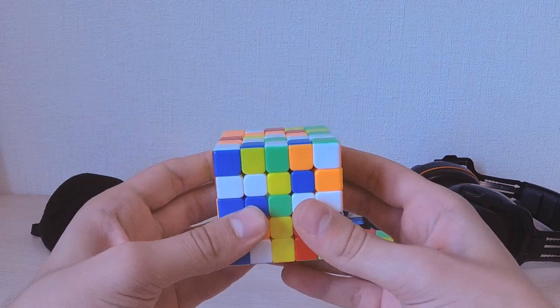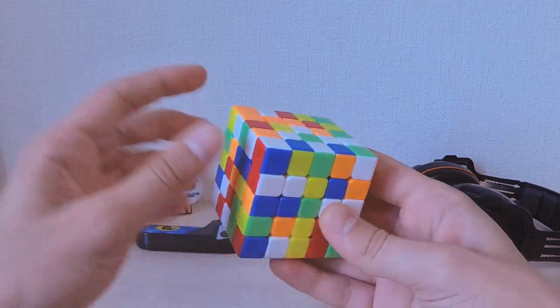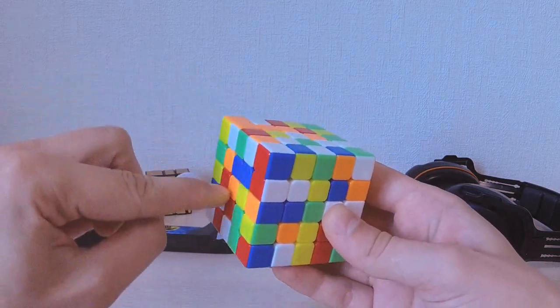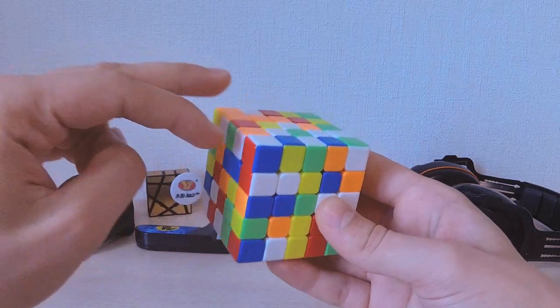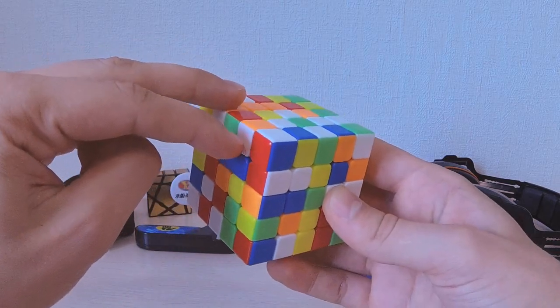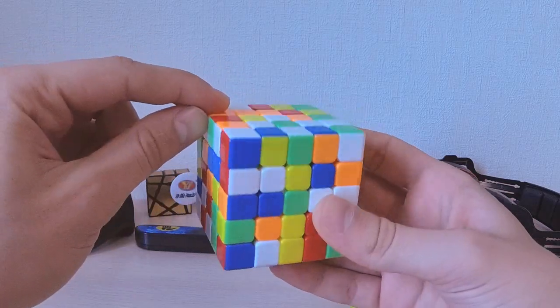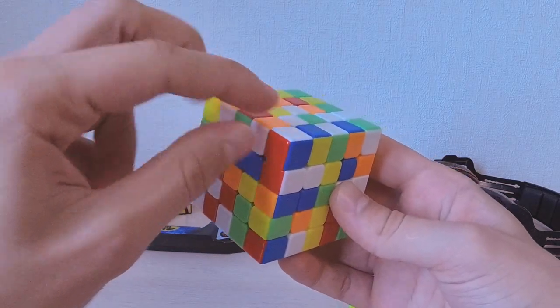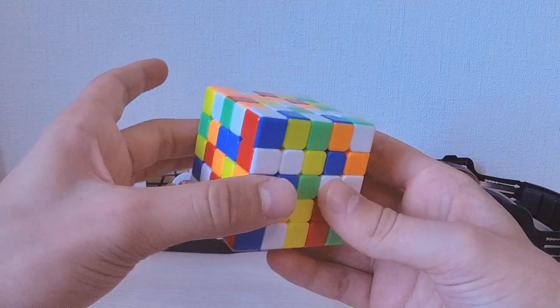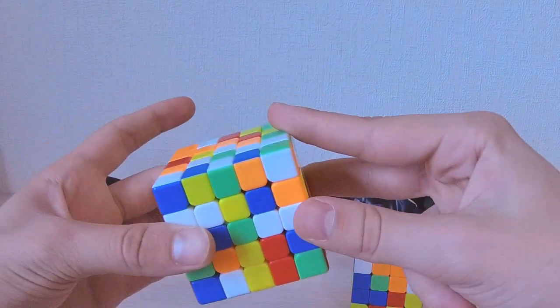However you should be aware that this method has one potential pitfall. For instance look at this edge between orange and white sticker. Those two are swapped and those occupy the entire LU edge.